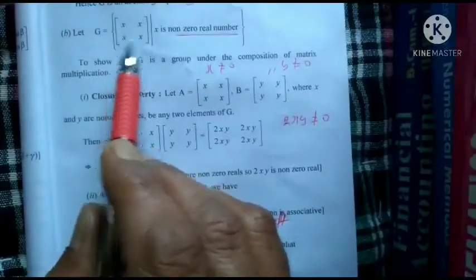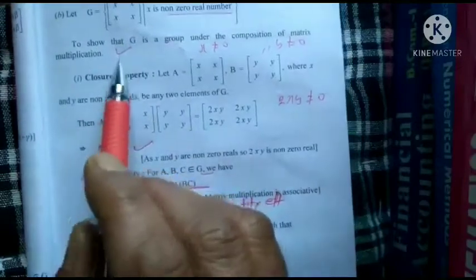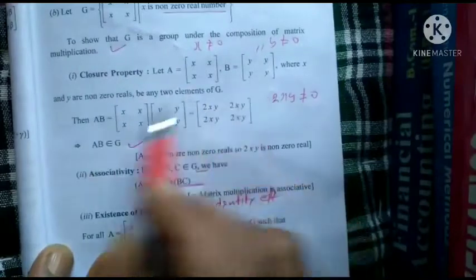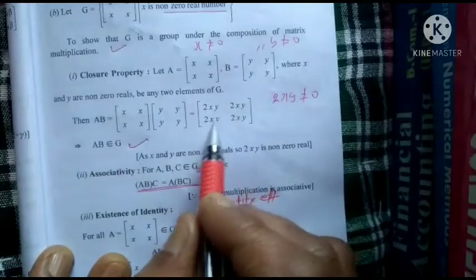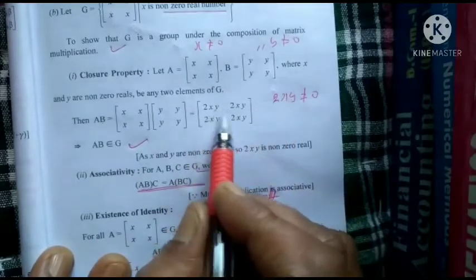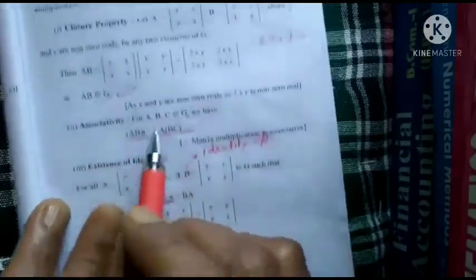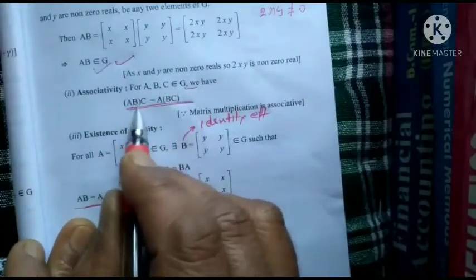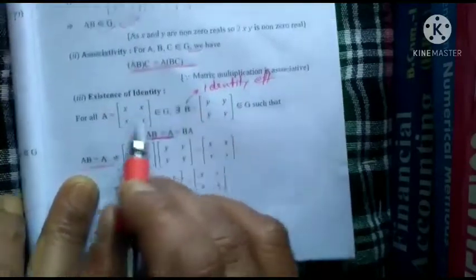The next question: G is the set of all matrices where all elements are the same value x, and x is a non-zero real (x ≠ 0). Take element A with value x (non-zero) and element B with value y (non-zero); their product gives a matrix with all elements equal to 2xy, which is non-zero since x and y are non-zero — proving closure. For associativity: for any three elements A, B, C in G, (A·B)·C = A·(B·C), since matrix multiplication is always associative.